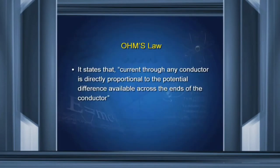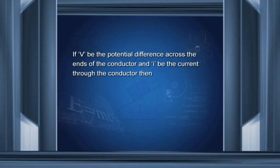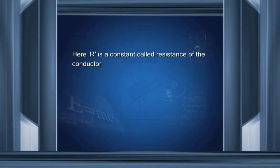Ohm's law states that current through any conductor is directly proportional to the potential difference available across the ends of the conductor, provided all physical conditions like temperature and stress remain constant. If V be the potential difference and i be the current, then i is directly proportional to V. Putting a coefficient of proportionality R, we get V = iR. Here R is called resistance. Its SI unit is ohm.